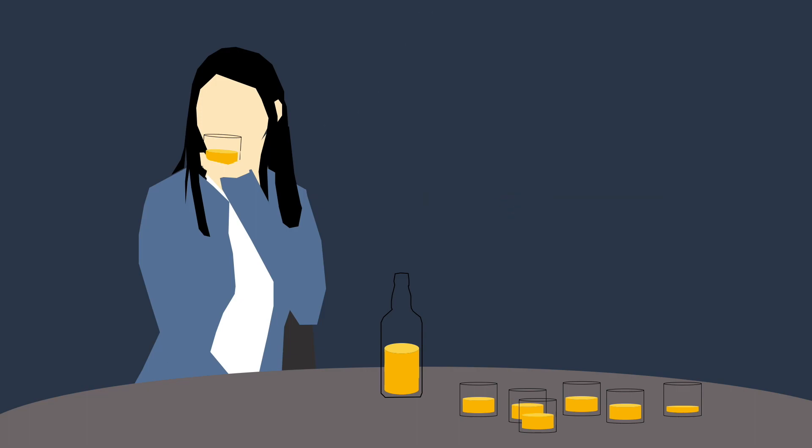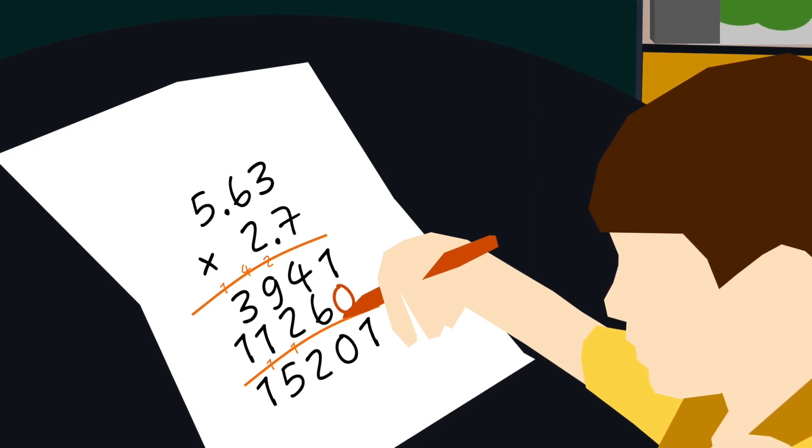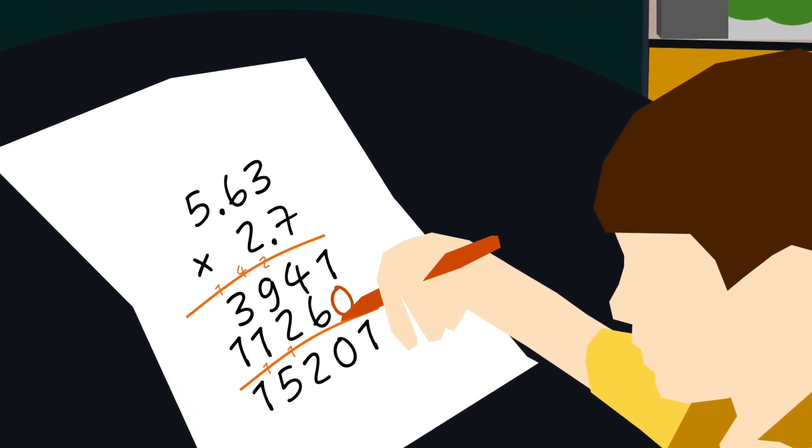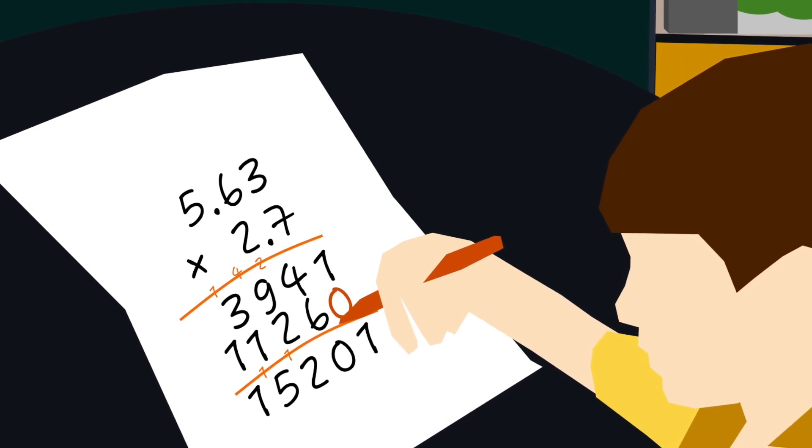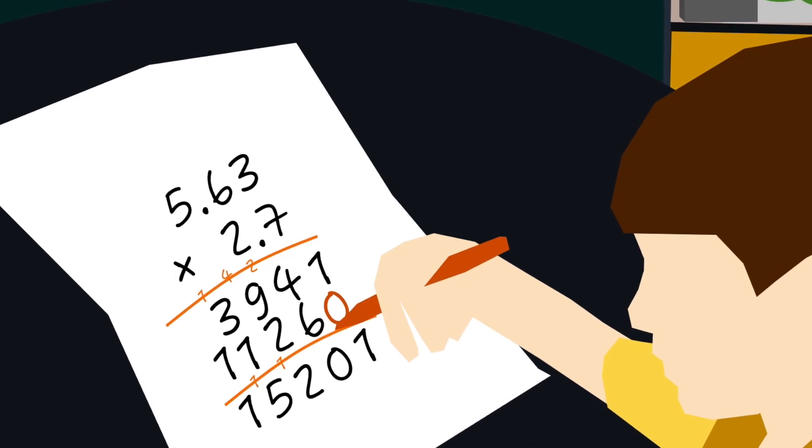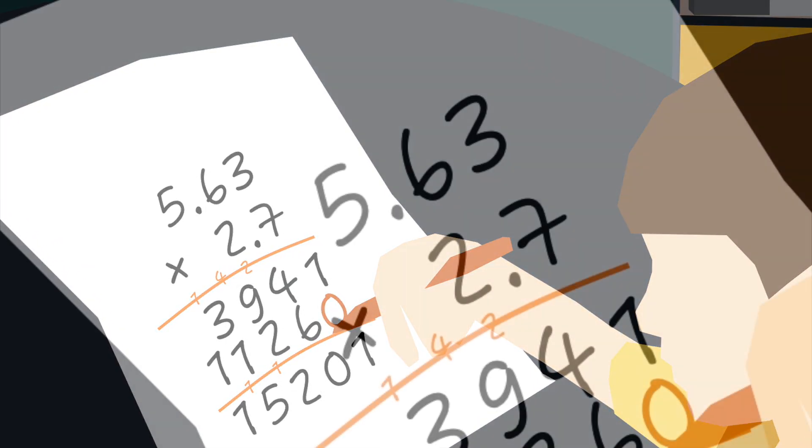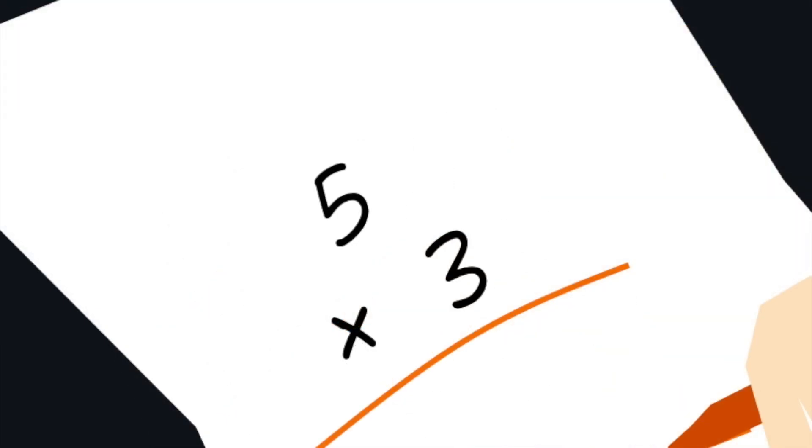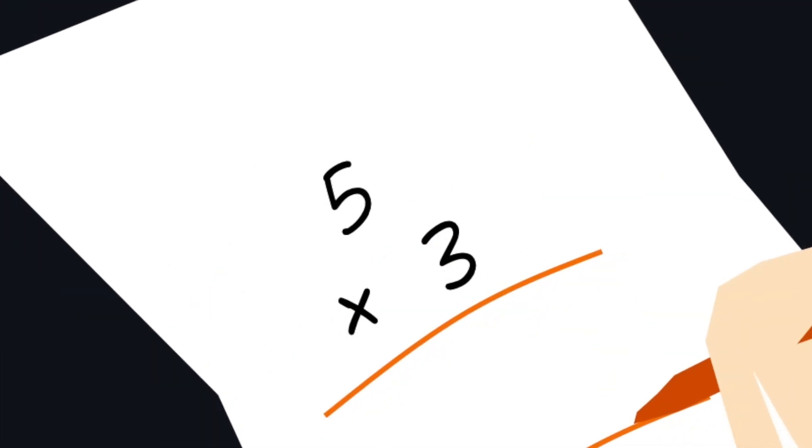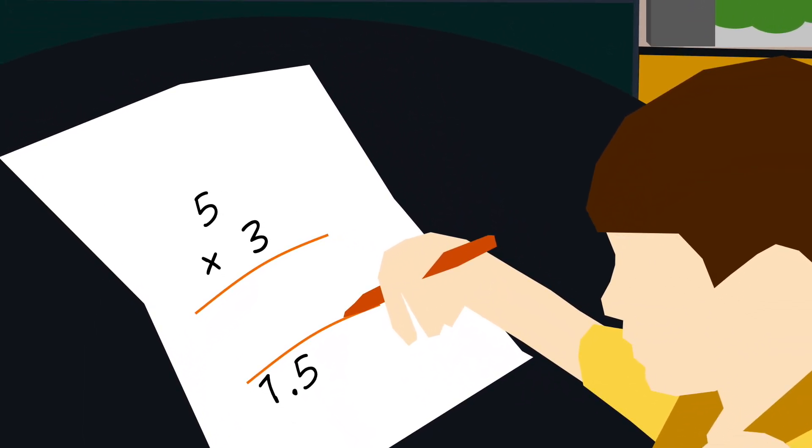So when we look at decimals, including calculating with decimals, one approach that's good to bring us back to the meaning of the numbers is to look at using estimation skills. In this example, I can't calculate 5 and 63 hundredths by 2 and 7 tenths in my head, but I know that it should be something similar to 5 or 6 times 3. So it shouldn't be anything like 152, or anything like 1 and a half.